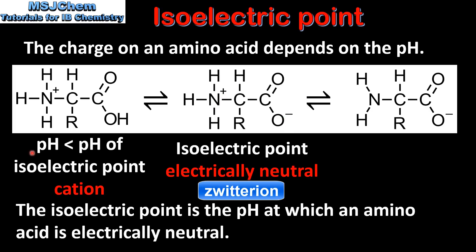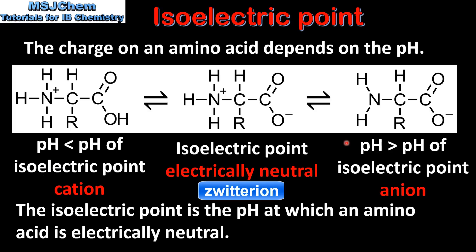At a pH which is less than the pH of the isoelectric point, the amino acid forms a cation. At a pH which is greater than the pH of the isoelectric point, the amino acid forms a negative ion, or an anion.